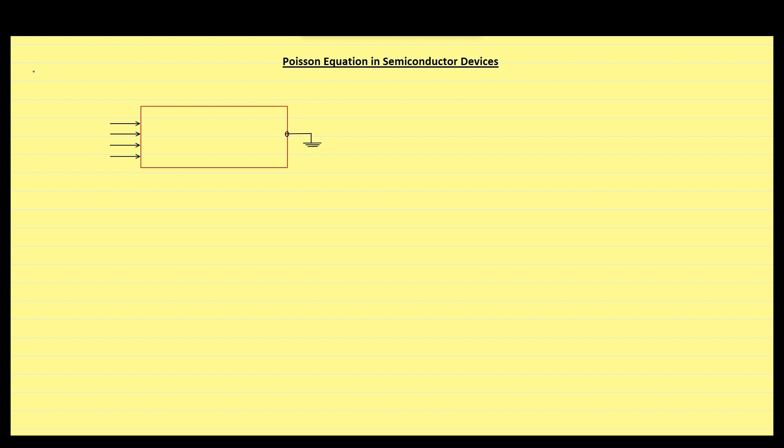In the last lecture, we assumed that the excess free electron concentration is equal to excess hole concentration. Basically, we assumed charge neutrality.